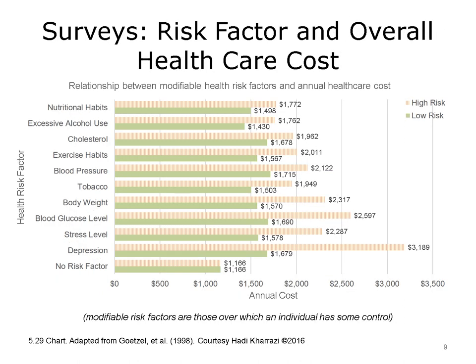This bar chart shows the potential share of risk associated with a number of behavioral risk factors. For example, a high risk for depression will increase the annual health care cost by almost $3,250 annually. Note that these are modifiable health risk factors that can be addressed accordingly to achieve a lower health care cost in a given population.